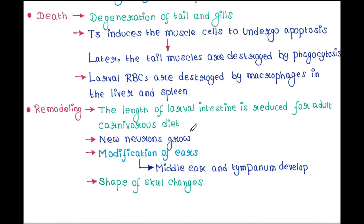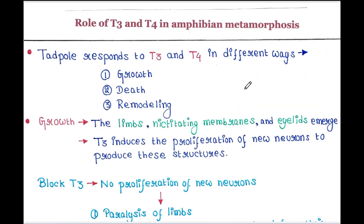Next is remodeling. The length of the larval intestine is reduced for an adult carnivorous diet, new neurons grow, and modification of the ears occurs — the middle ear and tympanum develop, and the shape of the skull changes. This is all about today's lecture. I hope you liked it — thank you for watching.